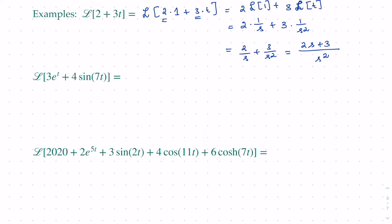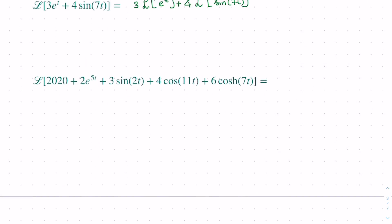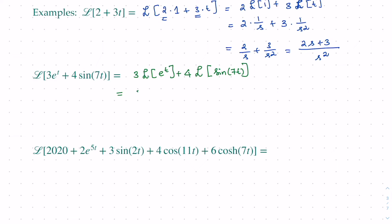What about the Laplace of 3e^t + 4 sin(7t)? By linearity, this is 3·L{e^t} + 4·L{sin(7t)}. From our formulas, L{e^t} = 1/(s−1) and for sin(7t), it's a sine so the constant is on top: 7/(s²+49). So the answer is 3·(1/(s−1)) + 4·(7/(s²+49)) = 3/(s−1) + 28/(s²+49). Again, thanks to linearity this is straightforward.